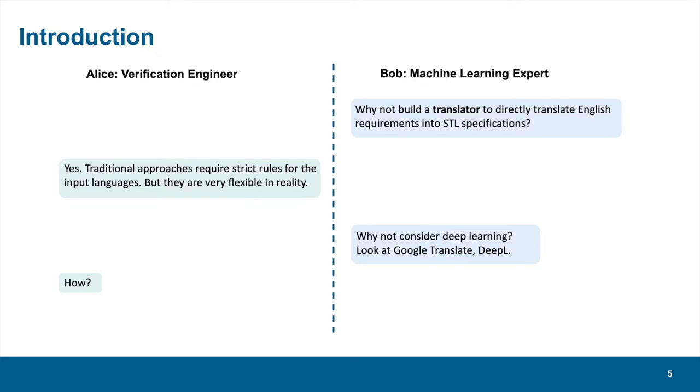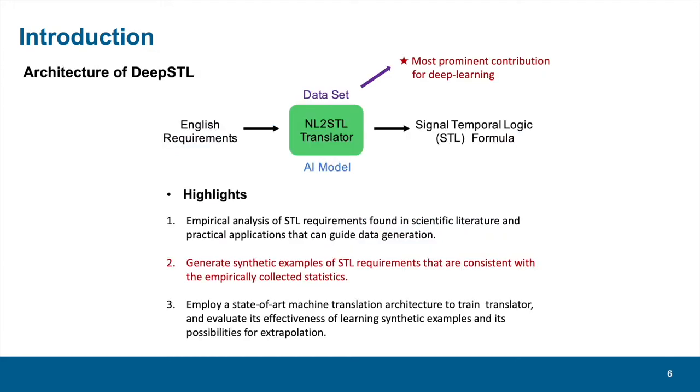Alice admits she has considered the possibility before. But she finds that traditional approaches tend to require strict rules for the input. But in fact, English is quite flexible. Then Bob asks, why not consider deep learning? OK, now the story ends. Let's return to our work.